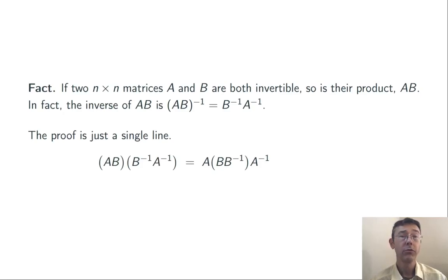The proof is super short and super clear, so let's just run through it. In order to show that these two things are actually inverses, all I have to do is multiply them. Technically I should do the multiplication in both orders; I'm just going to do AB times B^(-1)A^(-1).